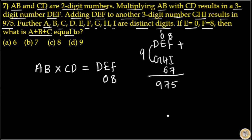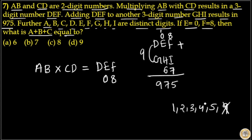E is equal to zero, F is equal to eight, H is equal to six, I is equal to seven. Remaining digits are one, two, three, four, five, and nine. Nine plus zero gives nine, but zero is E so zero can't be repeated, so nine is not D or G. Next, five plus four equals nine, so five or four will be D or G.